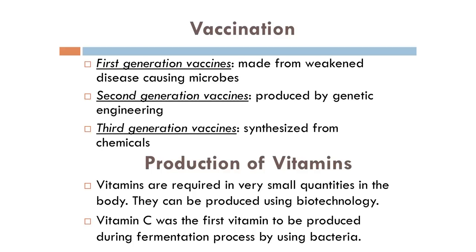The next application is in the production of vaccines. Vaccines are the dead or weakened microbes which are injected into the body which lead to the production of antibodies. These antibodies then fight the disease-causing foreign micro bodies present in the body. If vaccines are prepared from weakened disease-causing microbes, these are called first generation vaccines. When they are produced by genetic engineering we call them second generation vaccines, and when they are synthesized from chemicals we call them third generation vaccines.